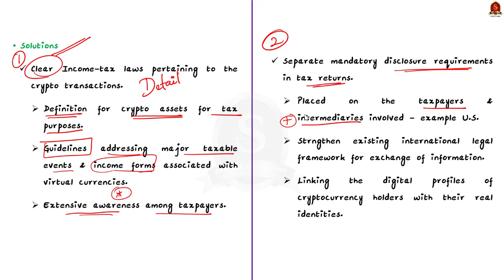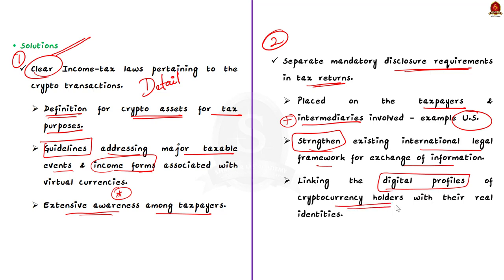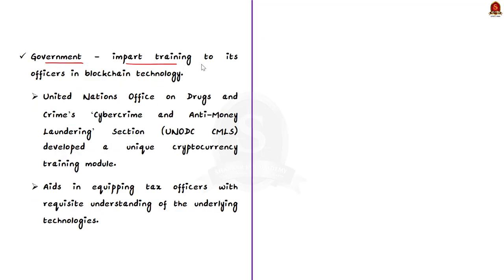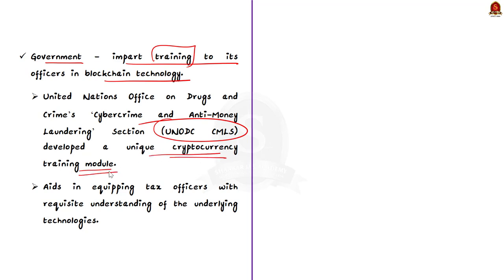Additionally, the existing international legal framework for exchange of information should be strengthened. This will enable collecting and sharing of information on crypto transactions and will go a long way in linking the digital profiles of cryptocurrency holders with their real identities. Finally, the government must impart training to its officers in blockchain technology. The United Nations Office on Drugs and Crime — UNODC-CMLS — has developed a unique cryptocurrency training module that aids in equipping tax officers with requisite understanding of the underlying technologies.